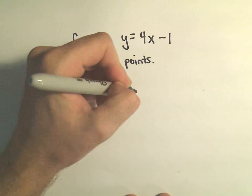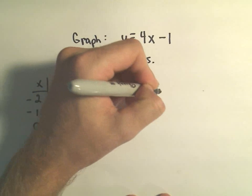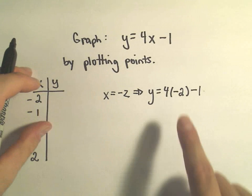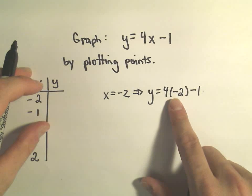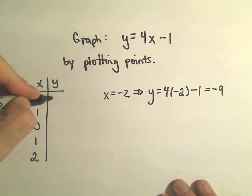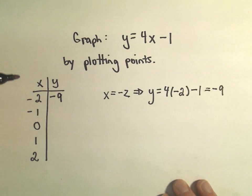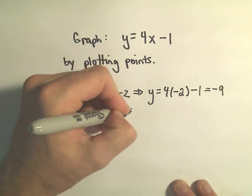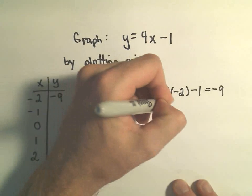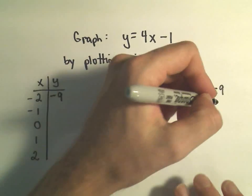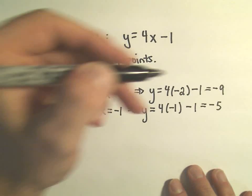If we use x equals negative 2, we'll get that y equals 4 times negative 2 minus 1. 4 times negative 2 is negative 8, and negative 8 minus 1 gives us negative 9. So the y value of negative 9 goes with the x value of negative 2. For x equals negative 1, y equals 4 times negative 1 minus 1, so negative 4 minus 1 gives us negative 5.